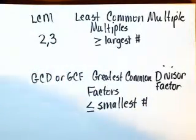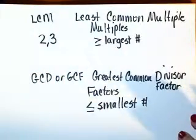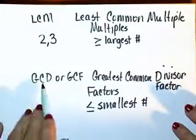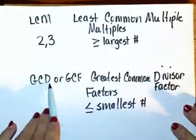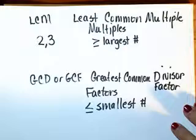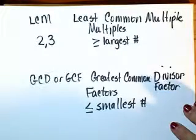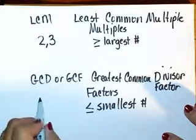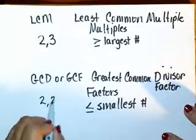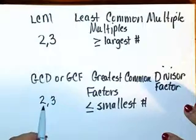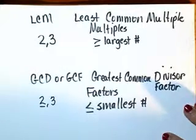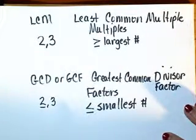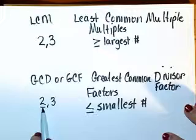Now the greatest common factor, or greatest common divisor — GCD or GCF — remember: divisor or factor depends on whether we're looking at division or multiplication. The greatest common factor will always be less than or equal to the smallest number. So the greatest common factor between two and three will have to be less than or equal to two.